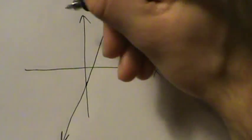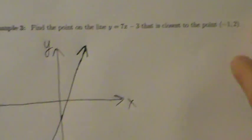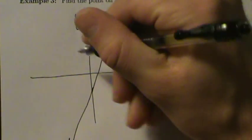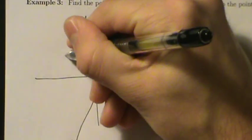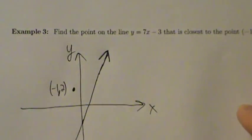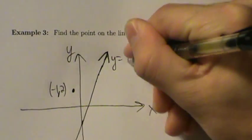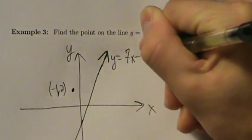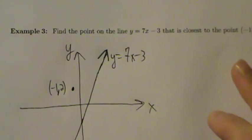All right — x-axis, y-axis. The point negative 1 comma 2 — that's the important point here, kind of somewhere up here. So negative 1 comma 2. Now we want to find the point on this line, y equals 7x minus 3, that's closest to this point negative 1 comma 2.